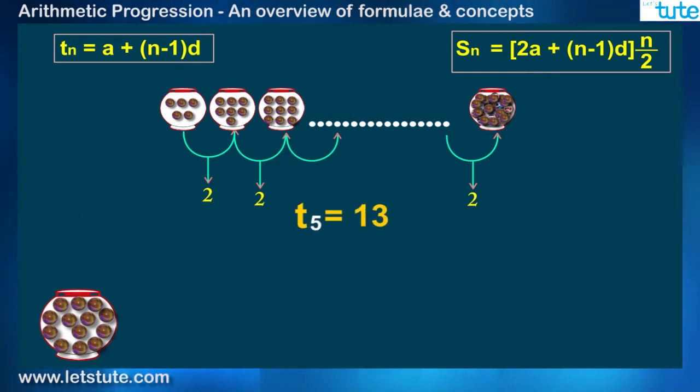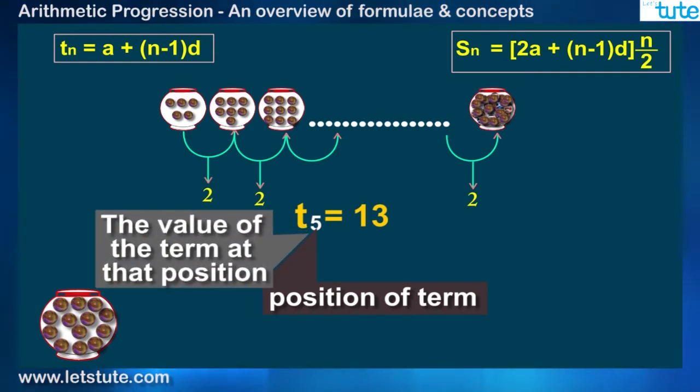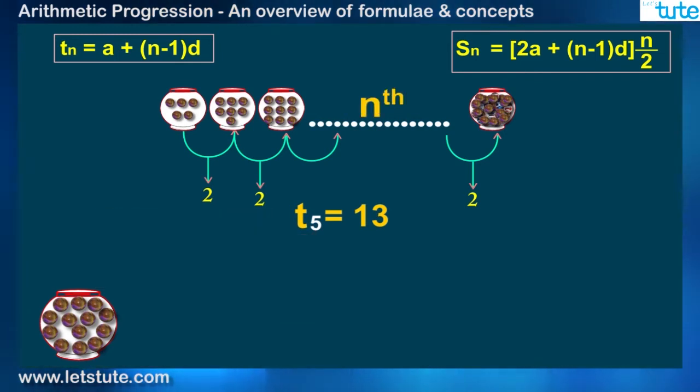Now I guess you must have understood the meaning of n and Tn. So n tells you the position or the number of terms, where Tn represents the value of the term at that particular position. So here the place of pot is nth and the number of marbles in that pot is Tn.